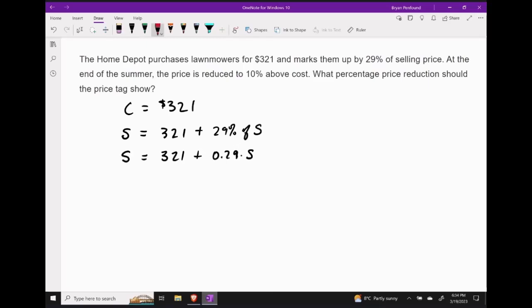Now this is a little bit different, but we do have some like terms inside of our equation. So our goal here is going to be to combine these two terms containing S. And we can do that by subtraction. So I can take S, take away 0.29S. This should be equal to $321.